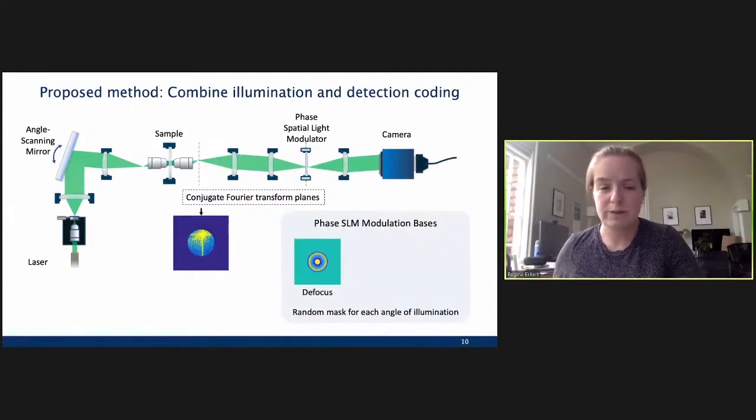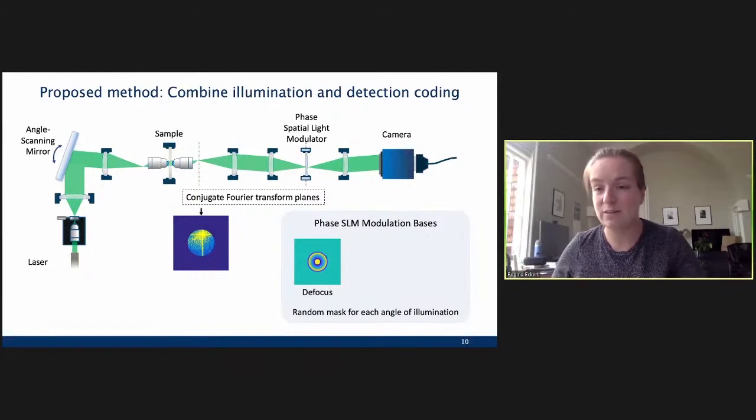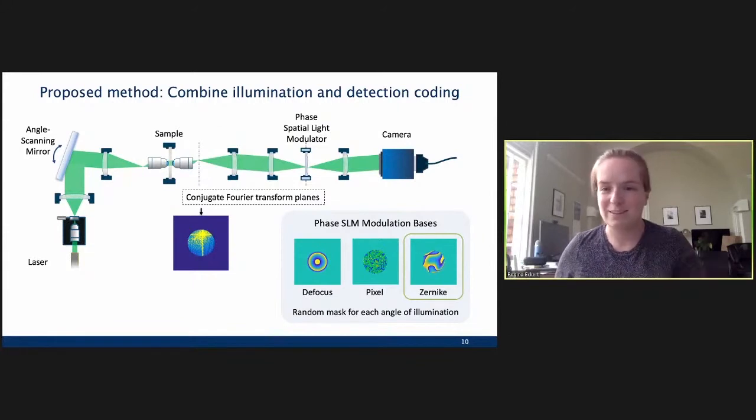So, we have an angle scanning mirror that's going to scan a coherent beam through our sample, which we're going to image with an objective, which is then going to relay the pupil plane of the objective to a phase spatial light modulator. So, we're going to be modulating the conjugate Fourier transform plane of this system. And then we detect at a camera. All right. So, what we're going to do here is at each different angle of illumination, we're going to apply a random phase mask. And we can think about doing this for actually a lot of different modulation bases, because we have some pixelated SLM that we can randomly code to do whatever we want to do, right? So, one easy way of thinking about this is doing some defocus kernel. So, that would be really similar to just directly combining previous methods where we're doing the angle scanning and the defocus scanning. However, we could also just do random pixels and see if that works. Or we could do something like a random coefficient on a Zernike basis.